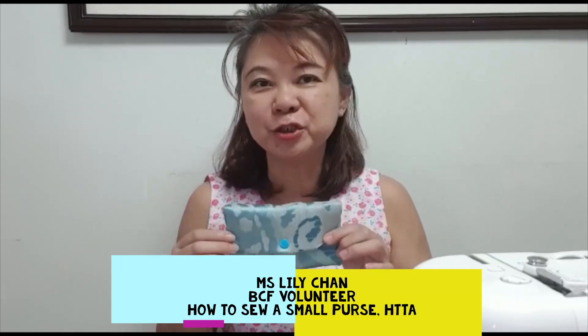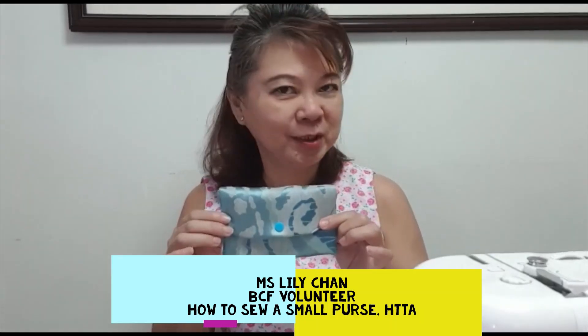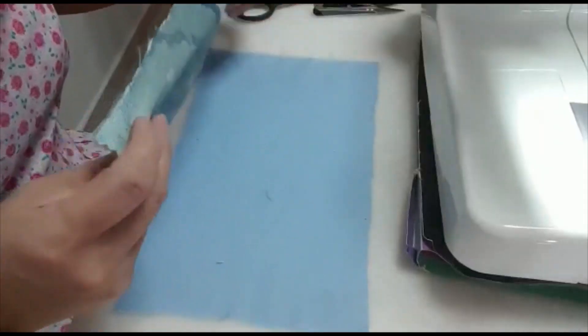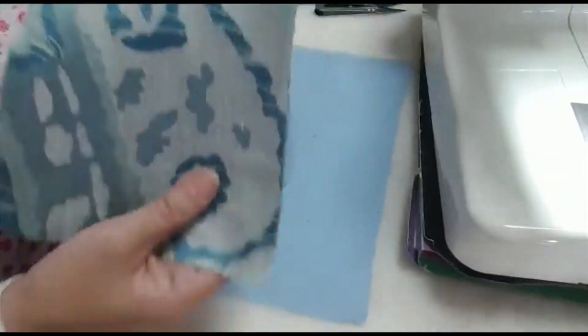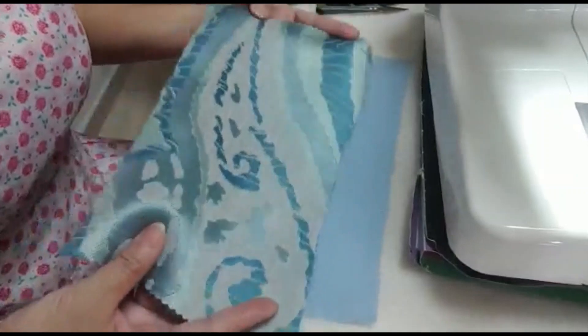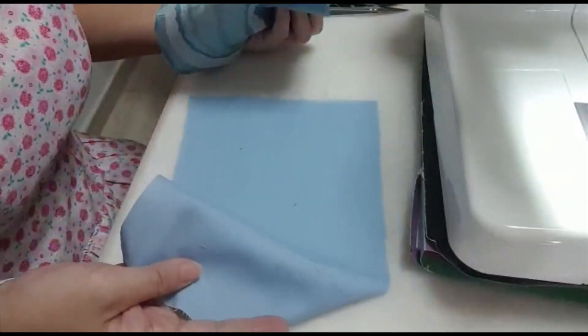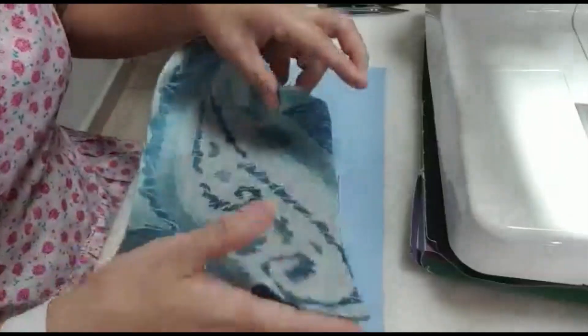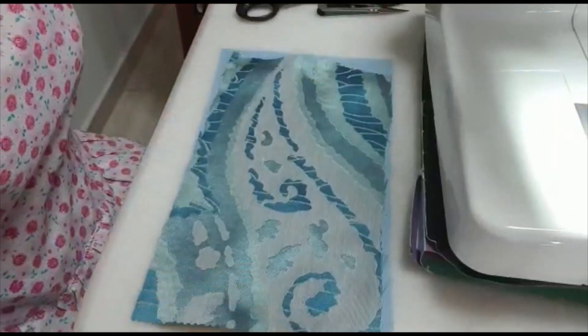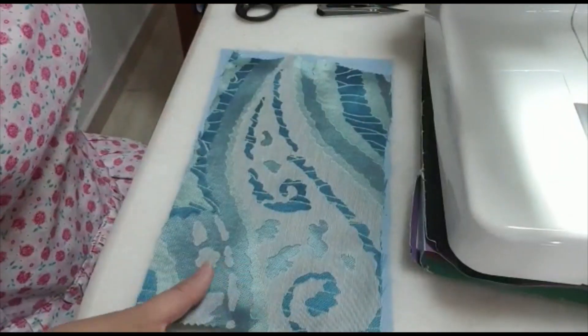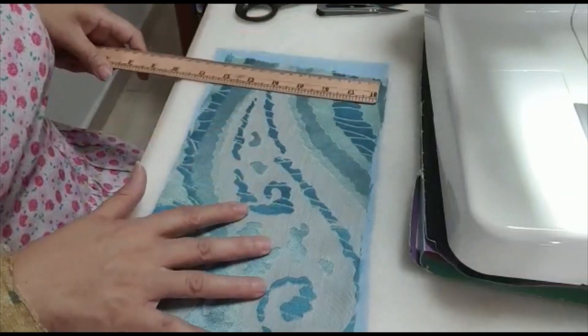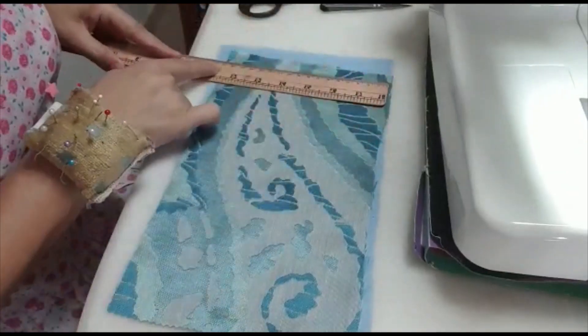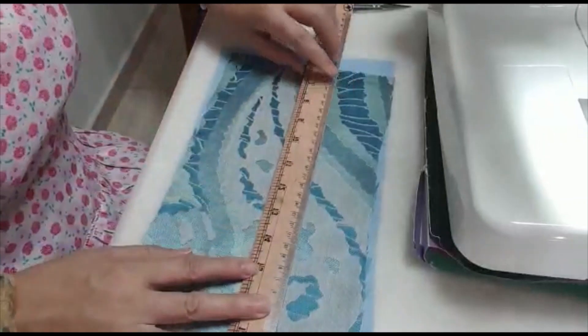Hi, today I'm going to teach you how to sew this small little purse. Get ready two pieces of cloth, a flowery one and the other one is a plain cloth. This is for the lining. Measurement is 18 by 30 centimeters.